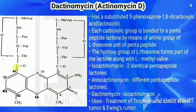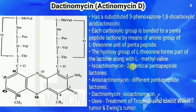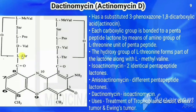We also need to know what isoactinomycin means. If the two pentapeptides are identical, it is called isoactinomycin; if different, it is called anisoactinomycin. Looking at the structure of dactinomycin, the two pentapeptides are identical, so it is classified as isoactinomycin. It is used in the treatment of trophoblastic tumor, Wilms' tumor, and Ewing's tumor.